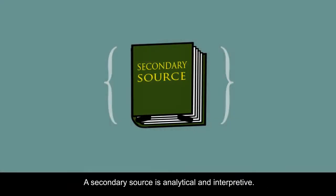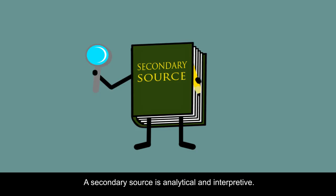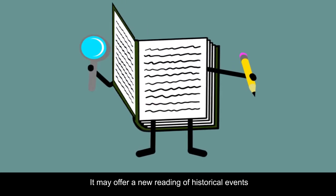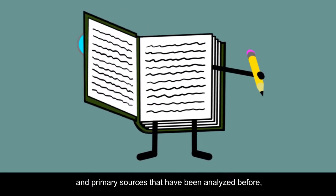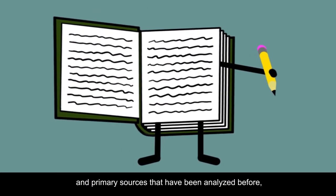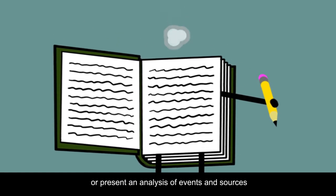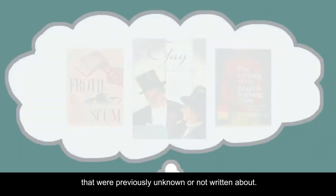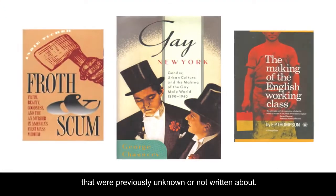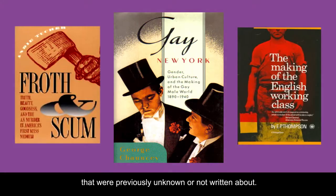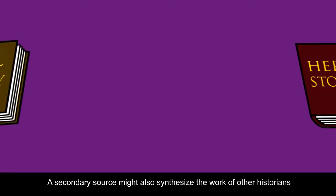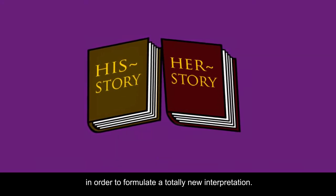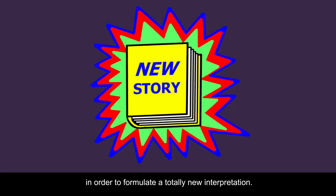A secondary source is analytical and interpretive. It may offer a new reading of historical events and primary sources that have been analyzed before, or present an analysis of events and sources that were previously unknown or not written about. A secondary source might also synthesize the work of other historians in order to formulate a totally new interpretation.